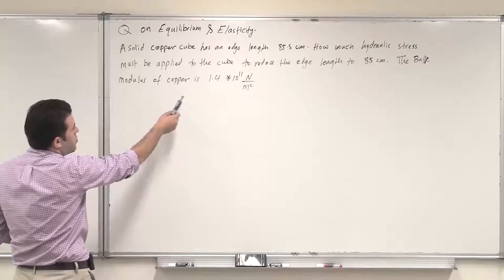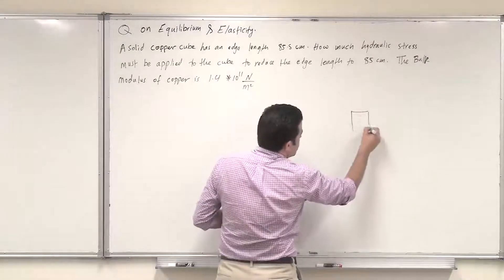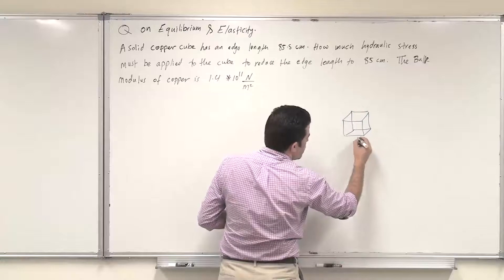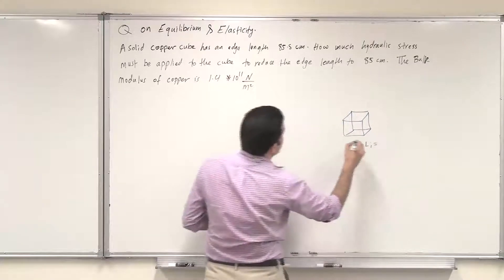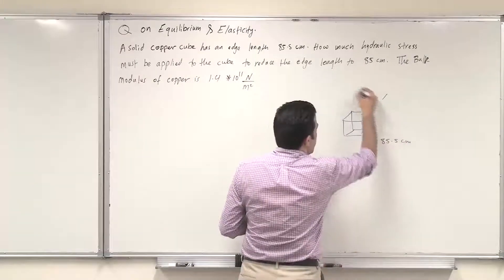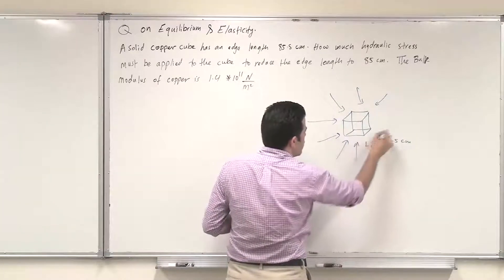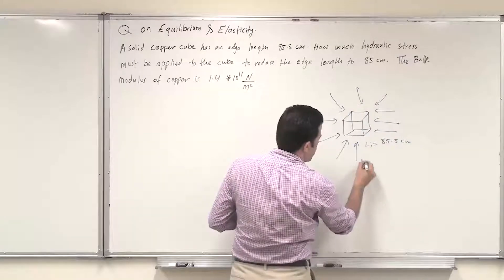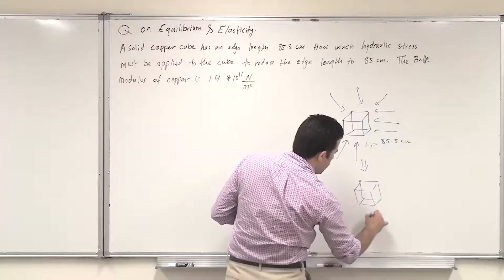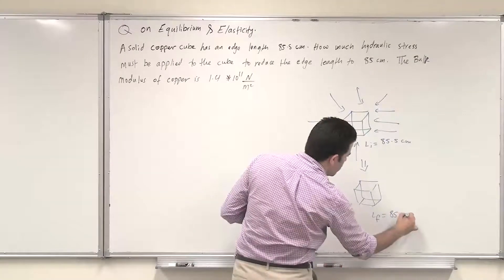The bulk modulus of copper is 1.4 × 10 to the power 11. We have this cube of copper and initially the initial edge length is 85.5 centimeters. Due to hydraulic stress applied in all directions, it will cause a reduction, giving a final edge length of 85 centimeters. This is the new edge length.